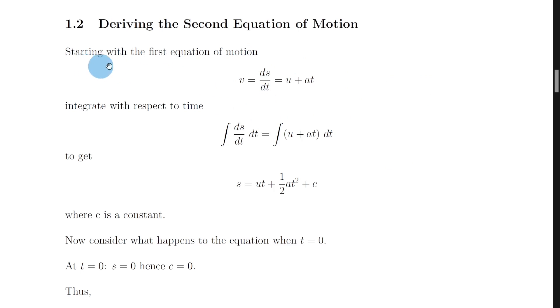Well what you want to do is start with the first equation of motion v equals u plus at which we derived in the previous video in this series. So that gives us v equals u plus at but instead of just v we can rewrite v is equal to ds by dt and that's one of your equations on the relationship sheet which says that velocity is equal to the rate of change of displacement.